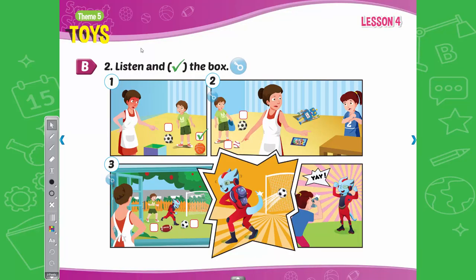B. 2. Listen and tick the box. 2. Tom, put the baseball in the bag. Yes, Mom. 3. Go outside and play, kids. Okay, Alfie. Now, put the soccer ball in the net. Yay! Yay, Alfie! You did it! Let's take a photo.